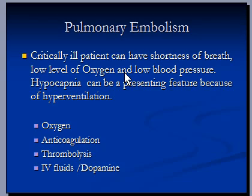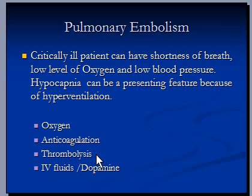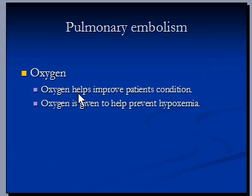Oxygen is given as the first step to deal with low level of oxygen if the saturation is going down. Anticoagulation means we try to stop blood clots from getting bigger. Thrombolysis means we try to break down the thrombus or blood clot. And IV fluids or dopamine are used in case of low blood pressure. We will discuss each of these things separately and quickly.